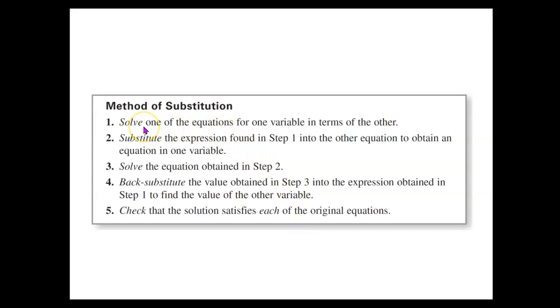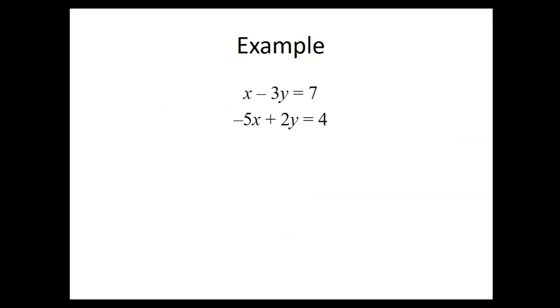So the way this method of substitution works, here are the steps you go through. Step 1, solve one of the equations for one variable in terms of the other. Sometimes you don't have to do that because it's already done for you. But sometimes that's the first thing you need to work out. Then substitute the expression you found in step 1 into the other equation to obtain an equation in just one variable. Then solve that equation and then take the number you get and substitute it back into the other equation to find the other variable. And then check that the solution you get satisfies each of the original equations. So let's work through some examples like that.